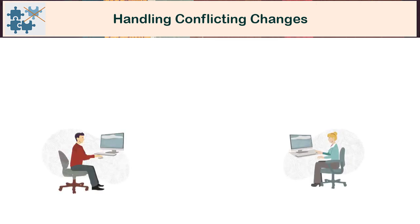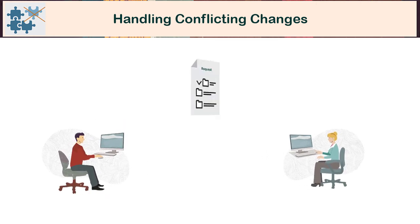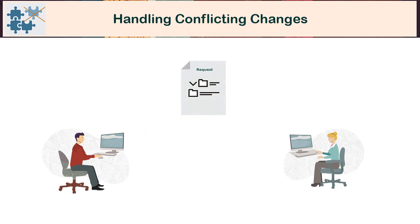For example, Tom and Susan are working in the same request. If Tom removes a cost center to which Susan then tries to make a change, Susan is notified that her change can't be made.